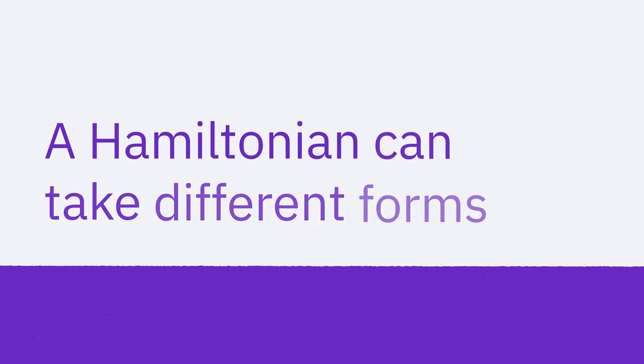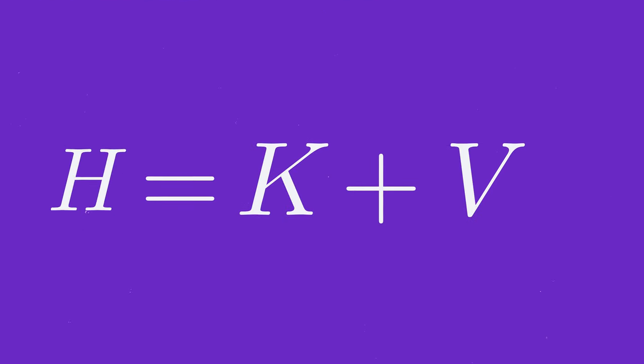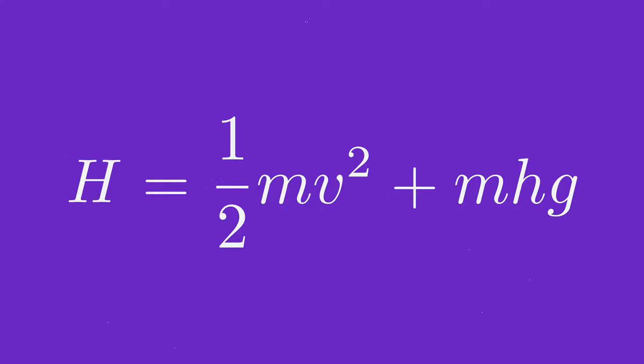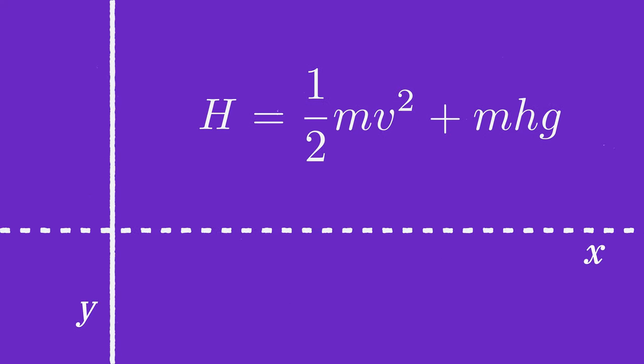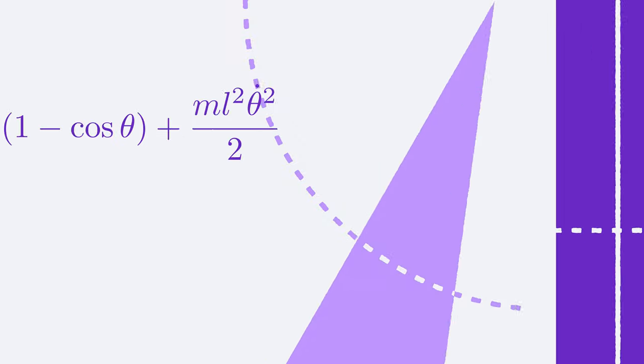A Hamiltonian can take different forms. It might incorporate different types of energy contributions, or be written in different coordinates or dimensions, which often makes them look very different.